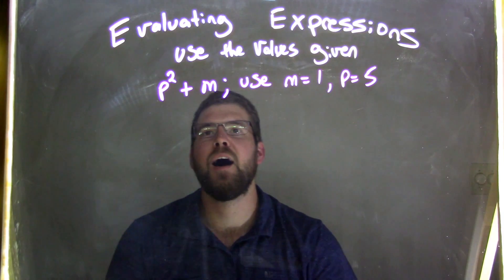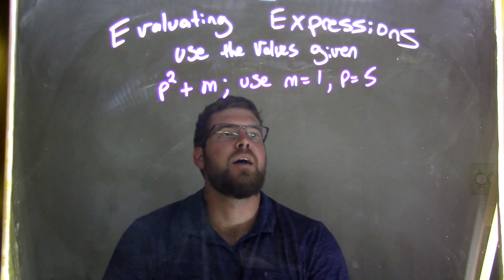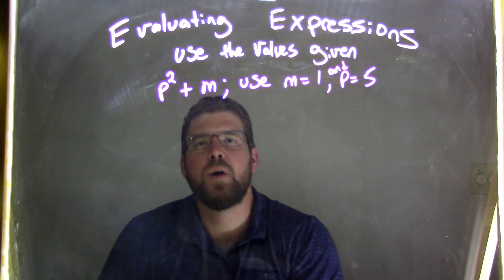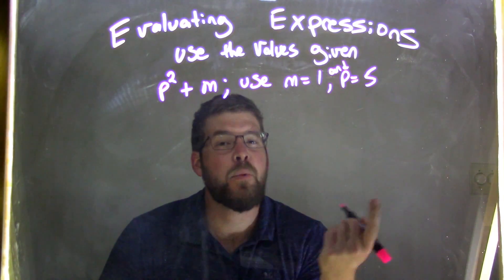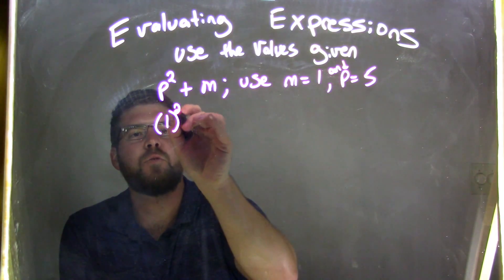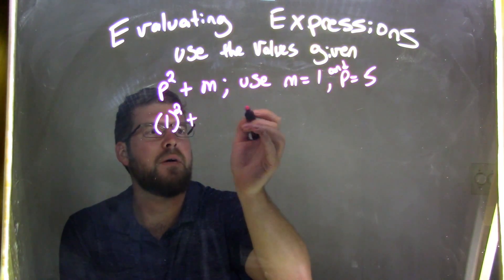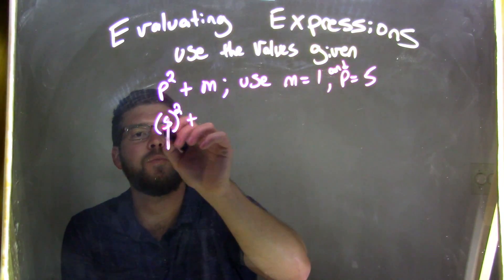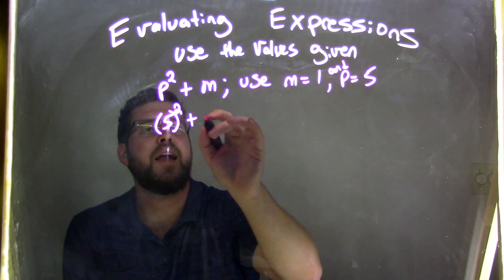Well, if I was given that, I'll put that in there. So p squared plus m. Well, if m is 1, we substitute first. So parentheses, 1 squared plus m - sorry, p. p comes out to be 5, excuse me, 5, and m is 1.